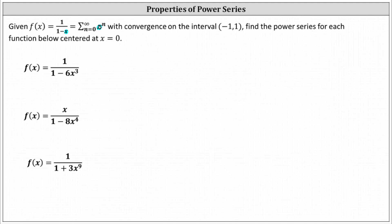For example, for the first function, we have f of x equals one divided by the quantity one minus six x cubed. Notice it fits the form perfectly except instead of x, we have six x cubed, which means we replace x with six x cubed in the given power series. This function f of x equals the power series — the sum from n equals zero to infinity of six x cubed raised to the power of n. While this is correct, we often change the form.